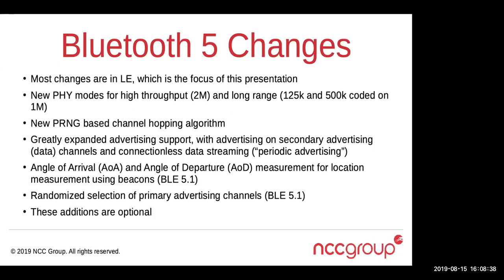Most of the changes in the Bluetooth 5 spec are in the low energy side, so this presentation will focus on that. One of the headline changes is the new PHY modes. The 2 megabit per second mode allows much higher throughput. There are also two new PHY modes using the same 1 megabit per second modulation as the original but with forward error correcting codes — one variant uses 8 times as many bits for maximum redundancy, and a less heavily corrected version is the 500k coded PHY.